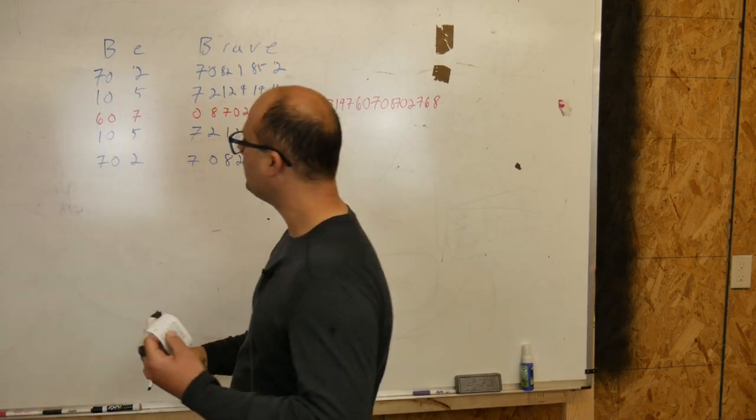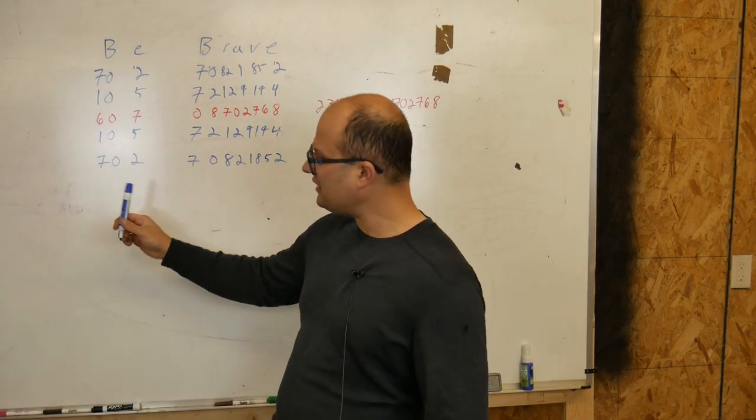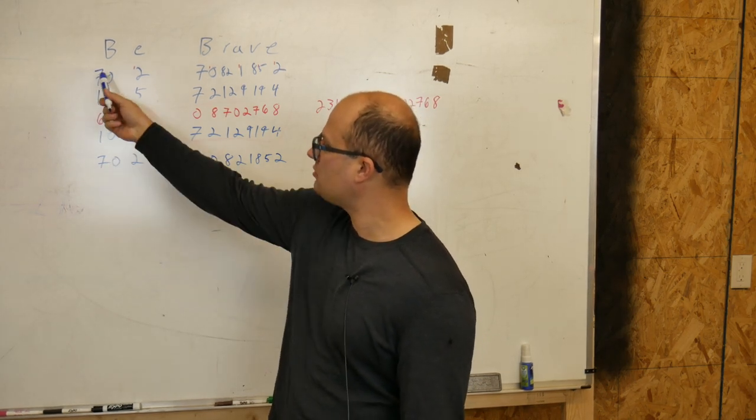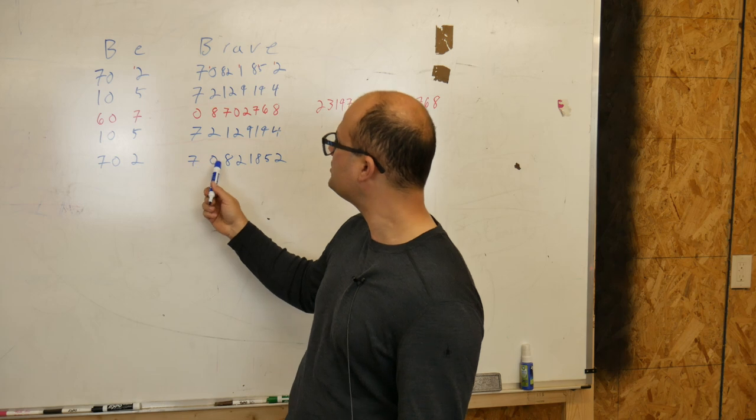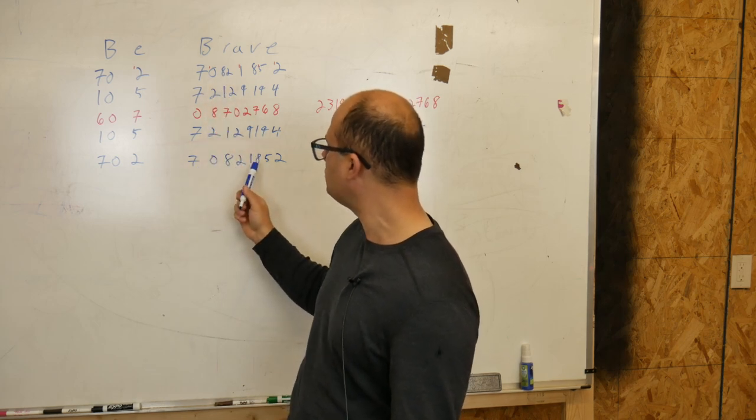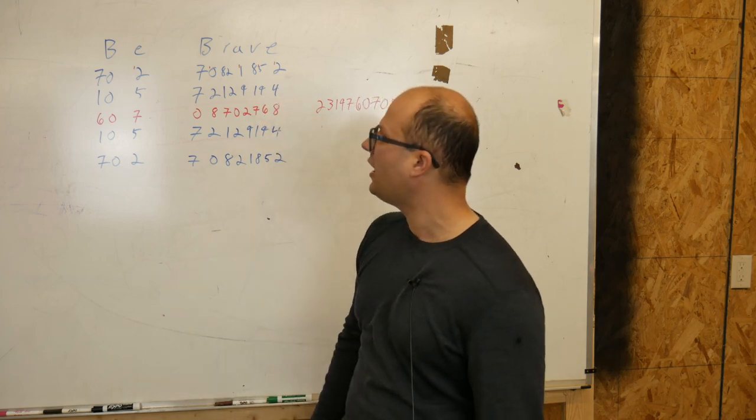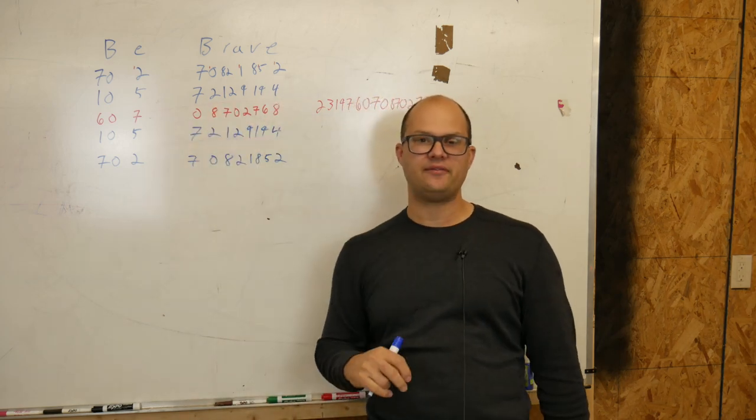Now, we should have a two. So, now, if I did this correctly, and this is why you encode and decode before you send, right? Seven, zero, seven, zero. Two, two. Seven, zero, seven, zero. Eight, two. Eight, two. One, eight, five. One, eight, five. Two, two. Okay, good. So, I know that I have decoded it correctly.